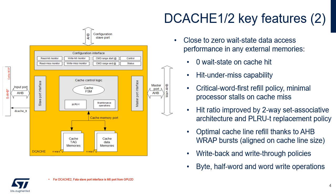DCache1 and DCache2 offer close to 0 wait-state data read-write access performance due to 0 wait-state on cache hit, hit-under-miss capability that allows serving new processor requests while a line refill due to a previous cache miss is still ongoing, and critical word-first refill policy which minimizes processor stalls on cache miss. The hit ratio is improved by the two-way set associative architecture and the pseudo-least recently used based on binary tree, or PLRUT, replacement policy. This algorithm is a good trade-off between hardware complexity and performance.